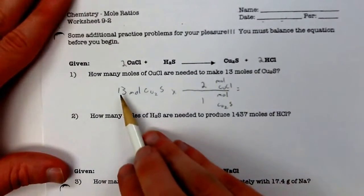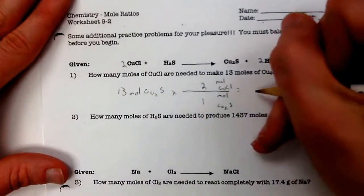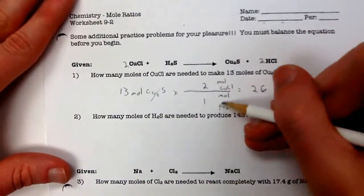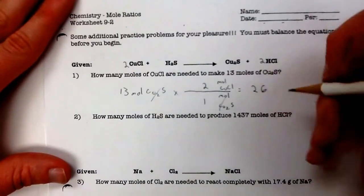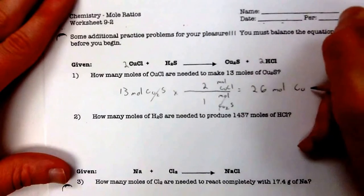The math on this is really simple. It's 13 times two, which is 26, and then you divide that by one, so it's still 26. This cancels, that cancels. So 26 moles of CuCl.